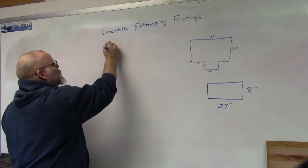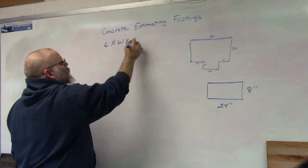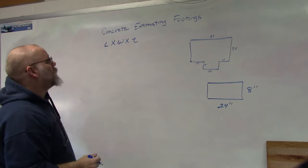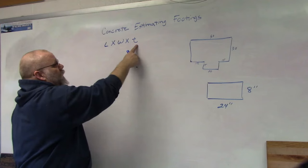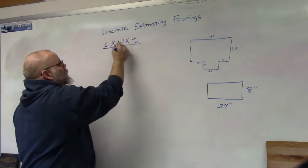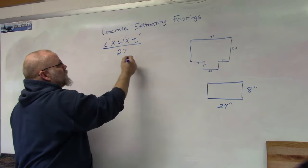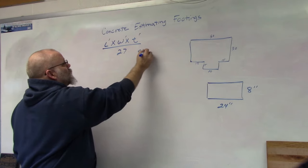So we're going to use the same formula we used for the slab, which is length times width times thickness. Then we're going to divide by 27 to change it to cubic yards, since these are in feet.